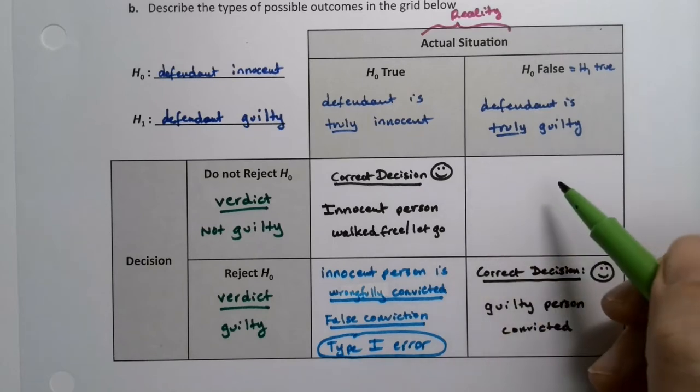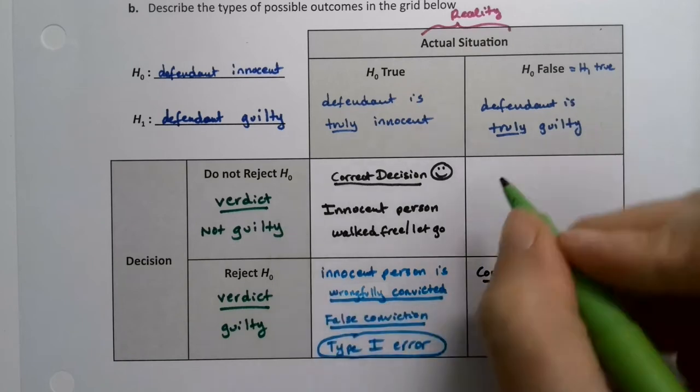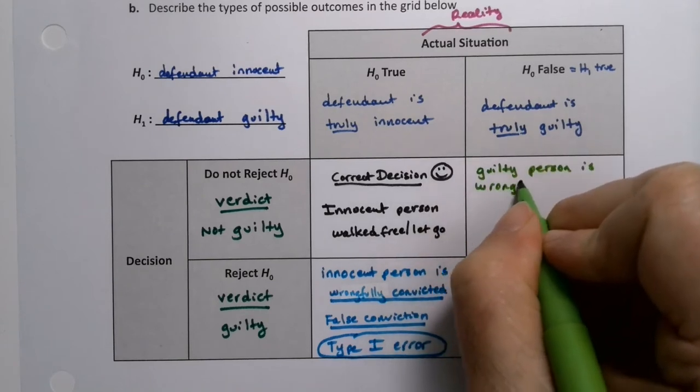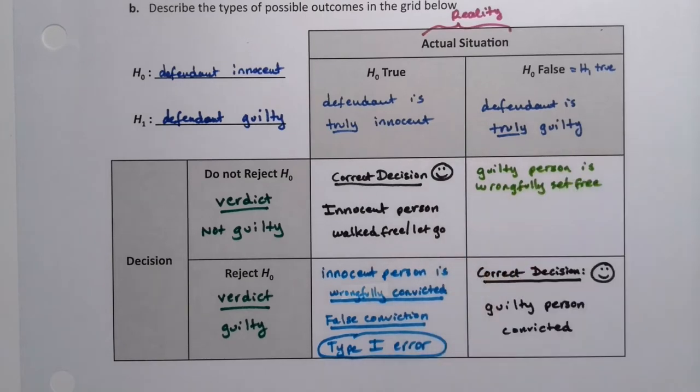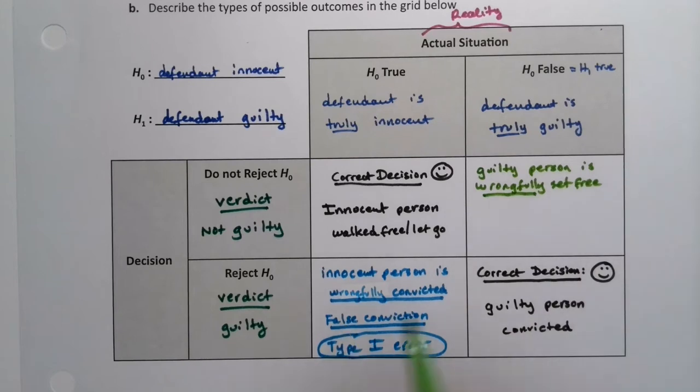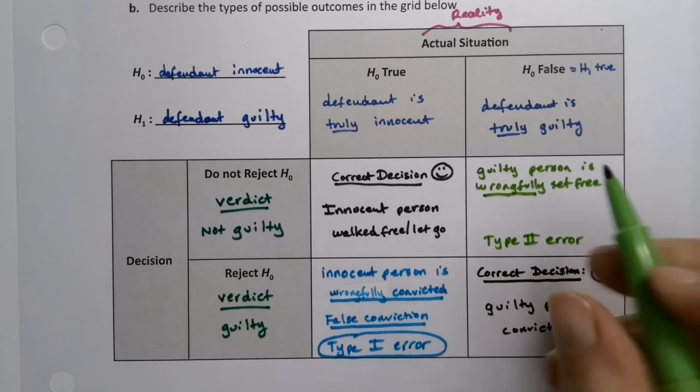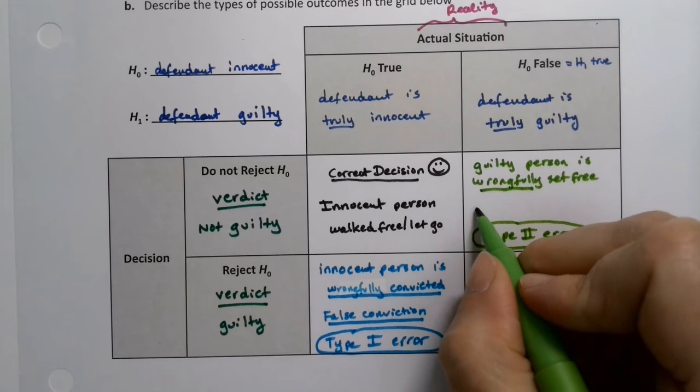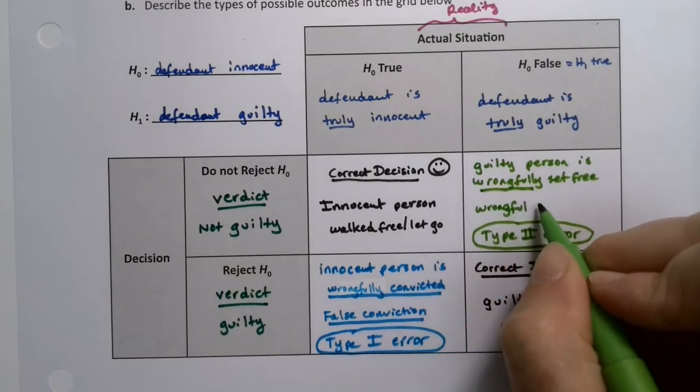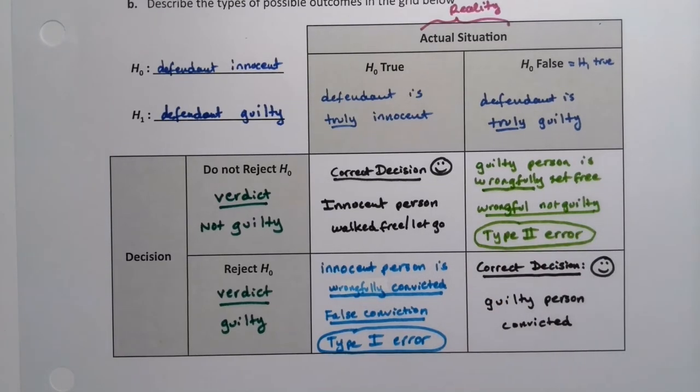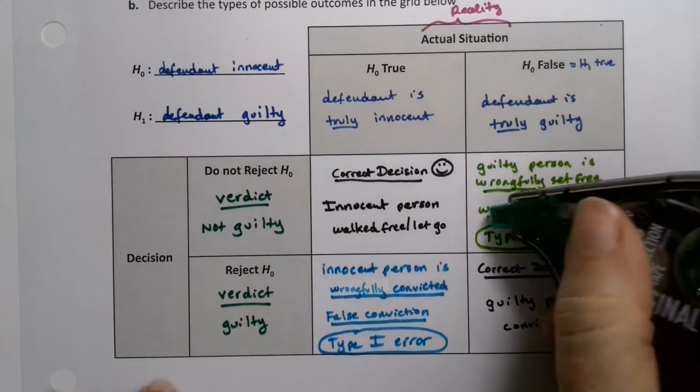Now over here in this corner, we have another problem. This is a guilty person that was let go. So a guilty person is wrongfully set free. That's not good. So it's not really an exoneration. It's a false, false innocence, if you will. So it's wrongful. It doesn't have quite the name that this does, but this is a type 2 error. Exoneration doesn't count because exoneration is something else. We're going to talk about that in just one second. But this is a wrongful, not guilty verdict. Or a false, not guilty verdict. How about that?